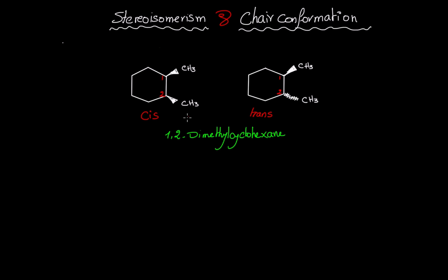The question is how can we represent these stereoisomers using chair conformation. We'll start by drawing the cis conformation. For cis, the two methyl groups have to be facing the same side. If you recall, for up carbons the axials are facing up, and for down carbons the axials are facing down. For equatorial bonds, on an up carbon the equatorial faces down, and on a down carbon the equatorial faces up.